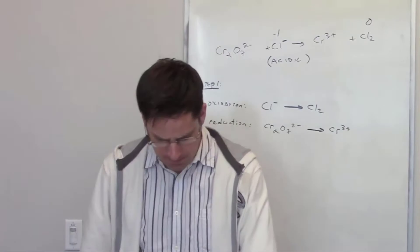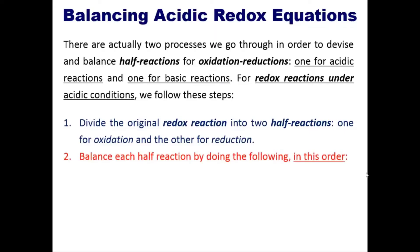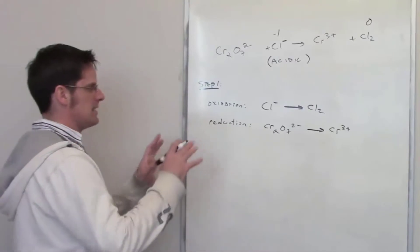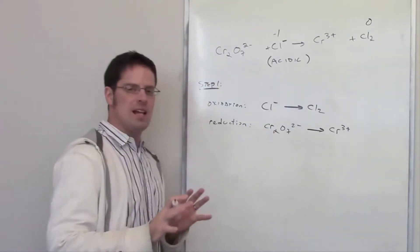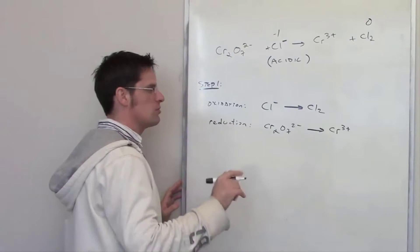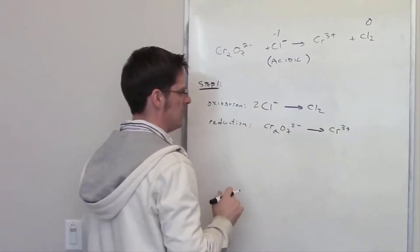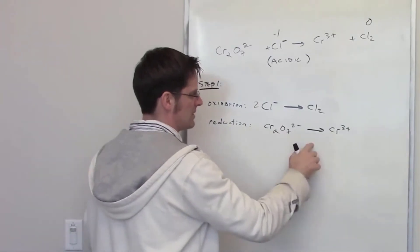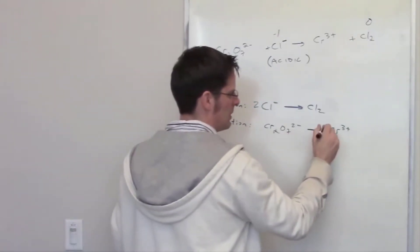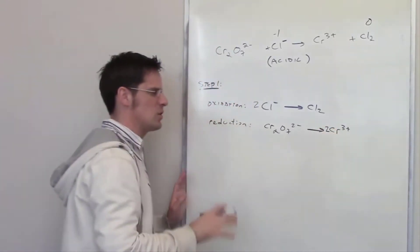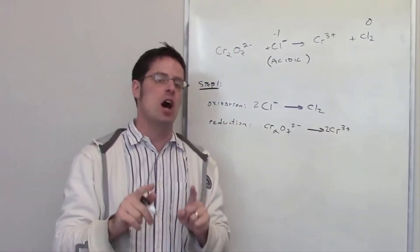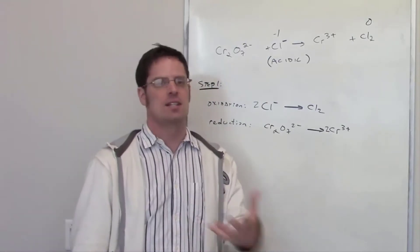Step two says to balance each half reaction in order. First, balance elements other than hydrogen and oxygen. For the oxidation half reaction, Cl⁻ to Cl₂ is easy — just put a two in front of Cl⁻. For the reduction half reaction, I've got two chromiums on the left, so I put two chromiums on the right. All elements other than hydrogen and oxygen are now balanced.